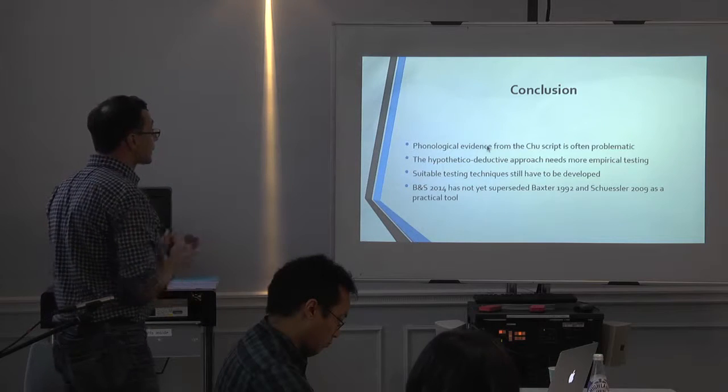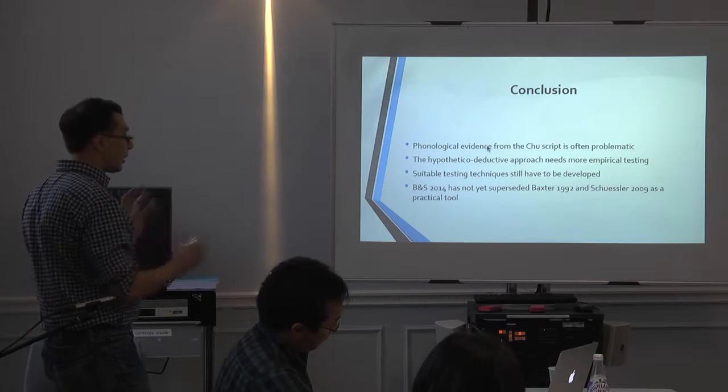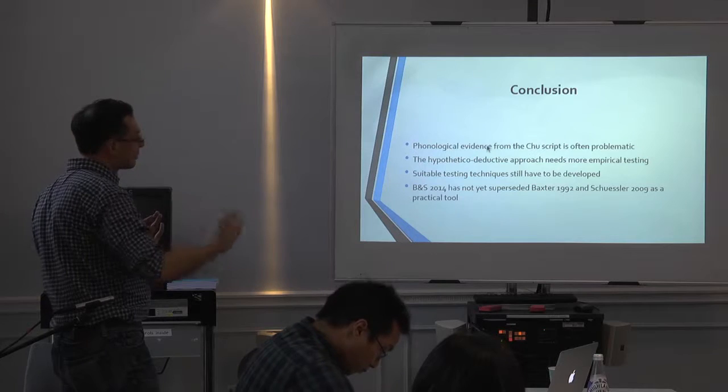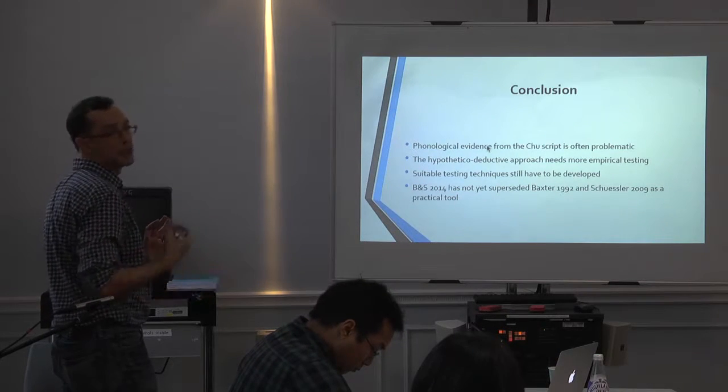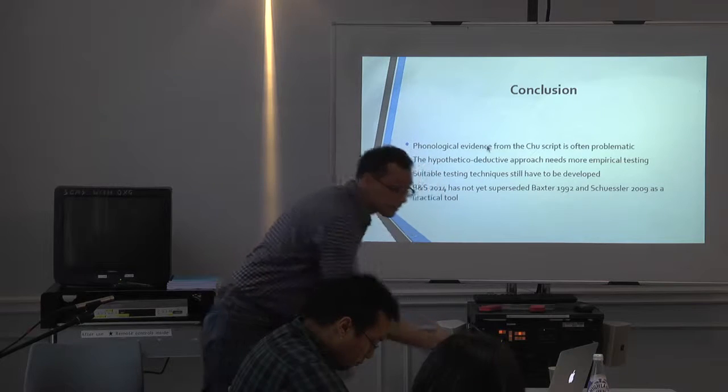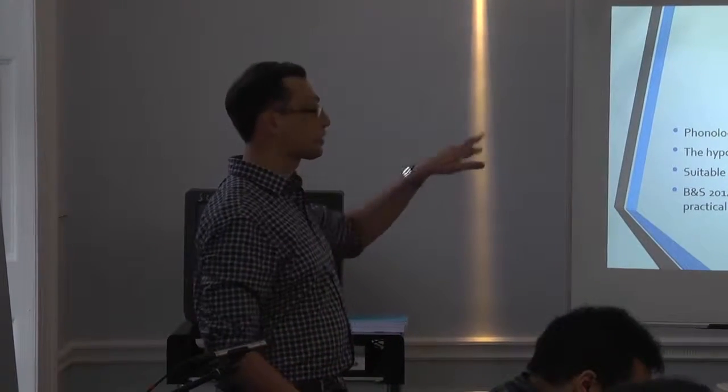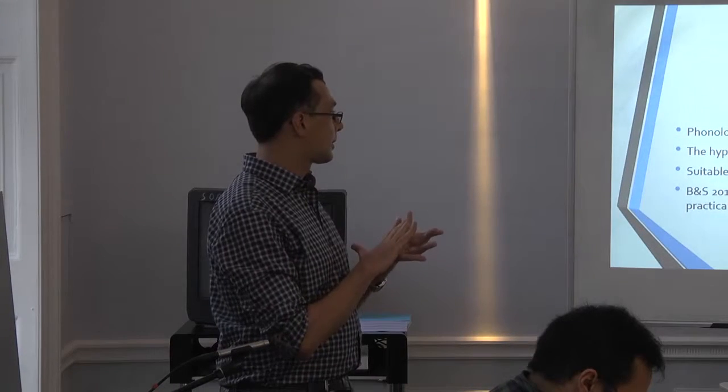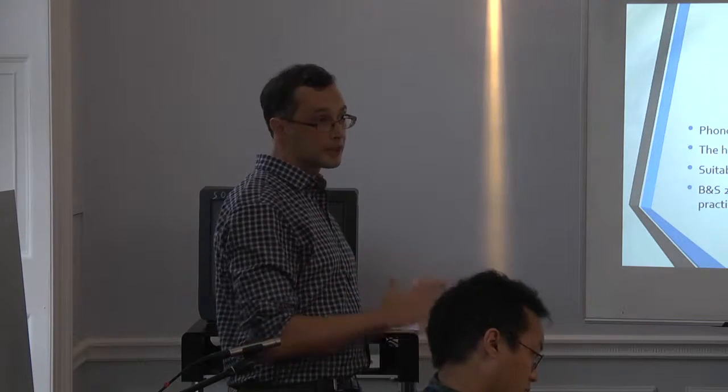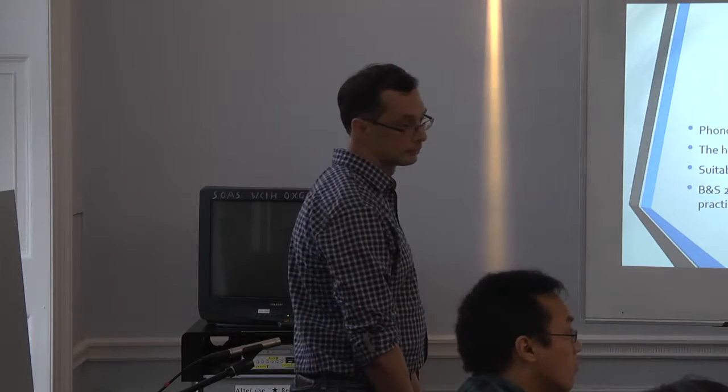The conclusion is that the evidence from the Chu script is often problematic, that sometimes, at least in this case, it's not clear how you test certain hypotheses, and especially it's not clear what is given as a normal suitable way to test this hypothesis. Maybe there is no general suitable way, maybe. Also, as a basically practitioner in the field that uses reconstructions to make decisions about jiajie, I'm still using Schuessler, basically. I mean, that one, because it's more systematized, but it's based on Baxter 1992. I don't think it's yet, I mean, it's really a task for the future to make the Old Chinese New Reconstruction, a tool to make day-to-day decisions about jiajie, jiajie. Thank you.